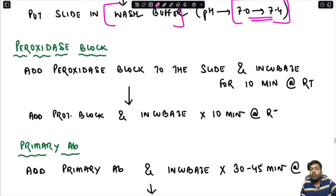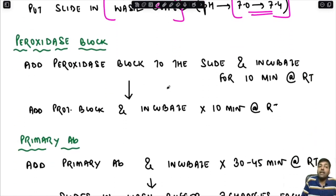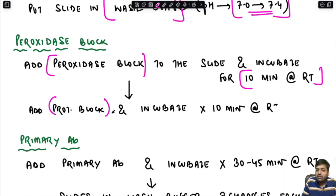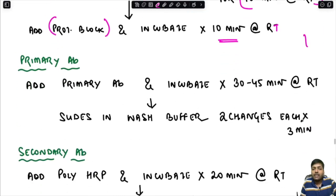After antigen retrieval, we go for the peroxidase block to block endogenous peroxidase activity. Add peroxidase block to the slide and incubate for 10 minutes at room temperature. After that, add the protein block — you can use normal serum or bovine serum albumin — to prevent background staining, and incubate for 10 minutes at room temperature.